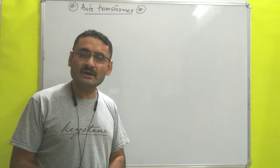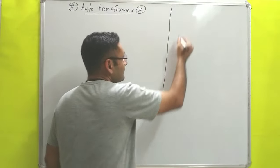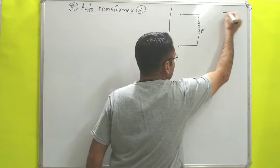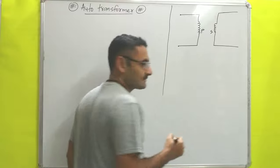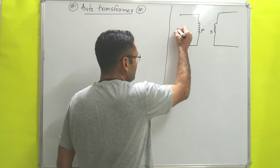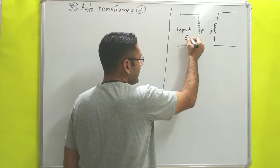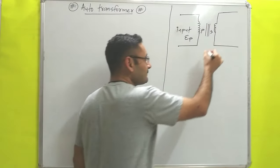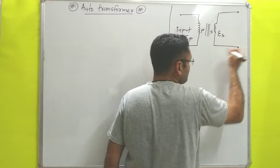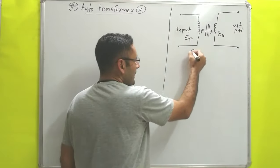Up till now we have studied about single phase and three phase transformers. In the conventional transformer, it has one primary winding or primary coil, and it has one secondary winding or secondary coil. That primary winding is connected with AC voltage input - we are supplying voltage EP to the primary winding. Due to the mutual induction process, on the secondary side EMF is induced, which is ES, and across those two terminals we get voltage output. This type of transformer is known as a conventional transformer.